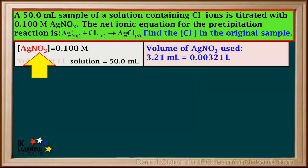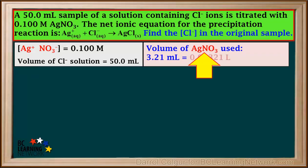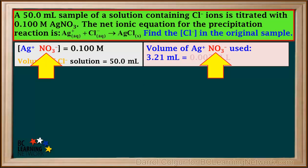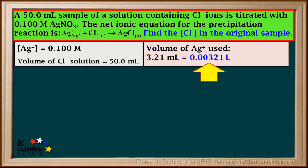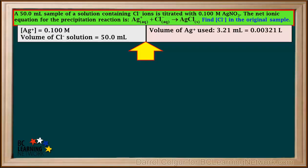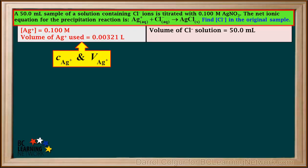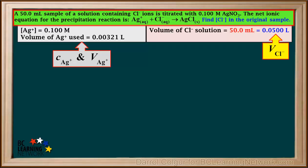We'll dissociate the AgNO3, giving us Ag⁺ and NO3⁻. The nitrate ion, NO3⁻, is a spectator ion — it does not form any precipitates, so we'll discard it. So we can simply say that the concentration of Ag⁺ is 0.100 molar, and the volume of Ag⁺ solution used is 0.00321 liters. We also convert the 50 milliliters of Cl⁻ solution to 0.0500 liters and organize all this information.